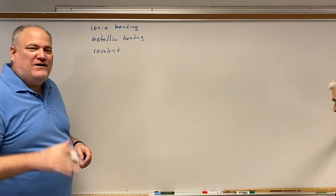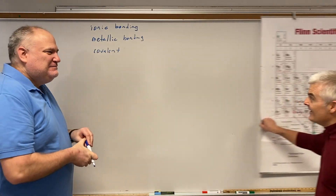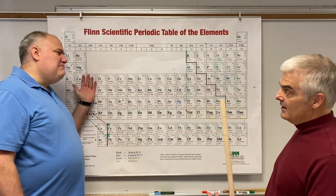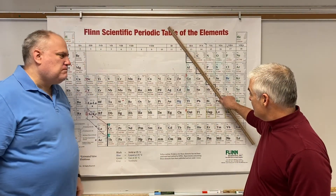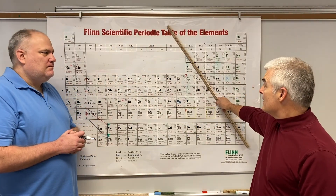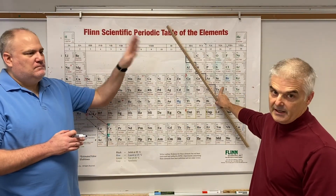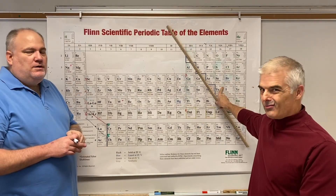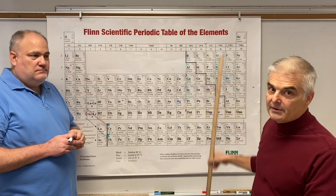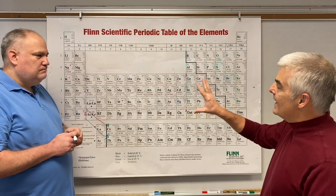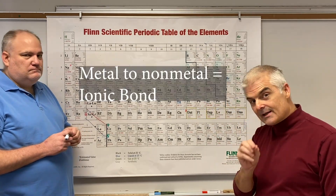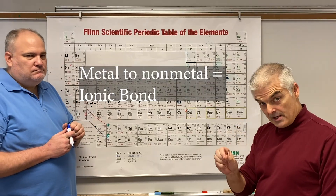In an ionic bond, it's a bond between a metal — metals are everything to the left of the staircase — and the non-metals in the upper right. We've learned how to name these: iron three chloride, iron three phosphate, things of that nature. So ionic bonds are metal to non-metal.